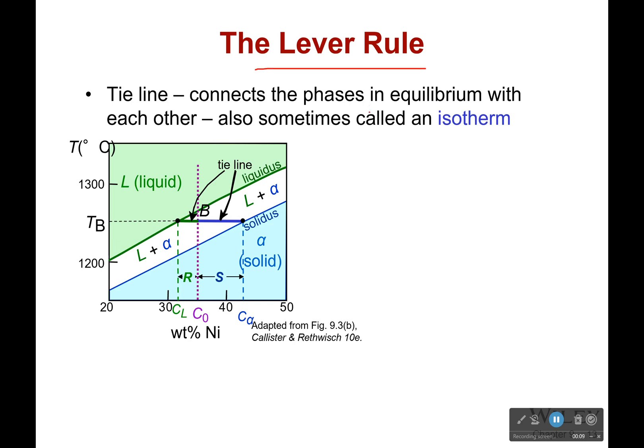So the tie line connects the phases in equilibrium with each other. It's often also sometimes called an isotherm. We have it right here and it's connecting straight across from our solid to liquid, saying we're somewhere in the middle so we're a mixture of this liquid and solid.